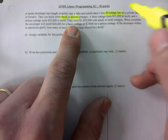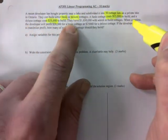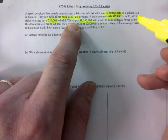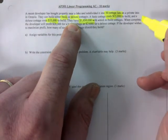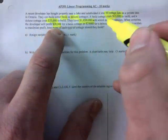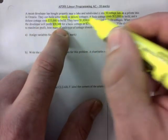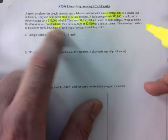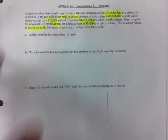A basic cottage costs $15,000, a deluxe costs $35,000. They have over a million dollars available, that's a budget that they have to build. And when complete, the developer will profit $20,000 for a basic and $25,000 for deluxe.